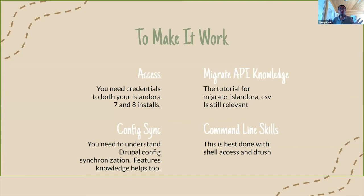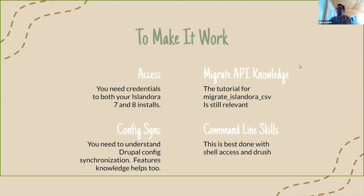To make all of this work, you obviously need access to both your Islandora 7 and 8. This is actually the biggest stumbling point for most people right off the bat. There's usually some XACML policy rejecting REST access if you're not from localhost or something like that. So check your XACML policies. You basically need to make sure you can use the REST API to pull out FOXML from your Fedora 3. You also need an Islandora 8 instance configured to receive this, and you need to know the Migrate API to some extent.